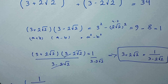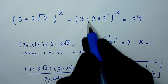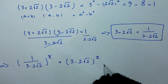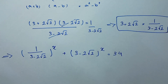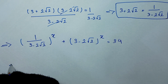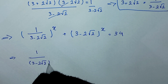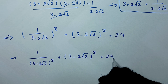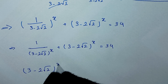We can now rewrite the equation. The term (3 + 2√2)^x becomes (1/(3 - 2√2))^x, plus (3 - 2√2)^x equals 34. In other words, (3 + 2√2)^x is rewritten as 1/(3 - 2√2)^x. We let t = (3 - 2√2)^x.